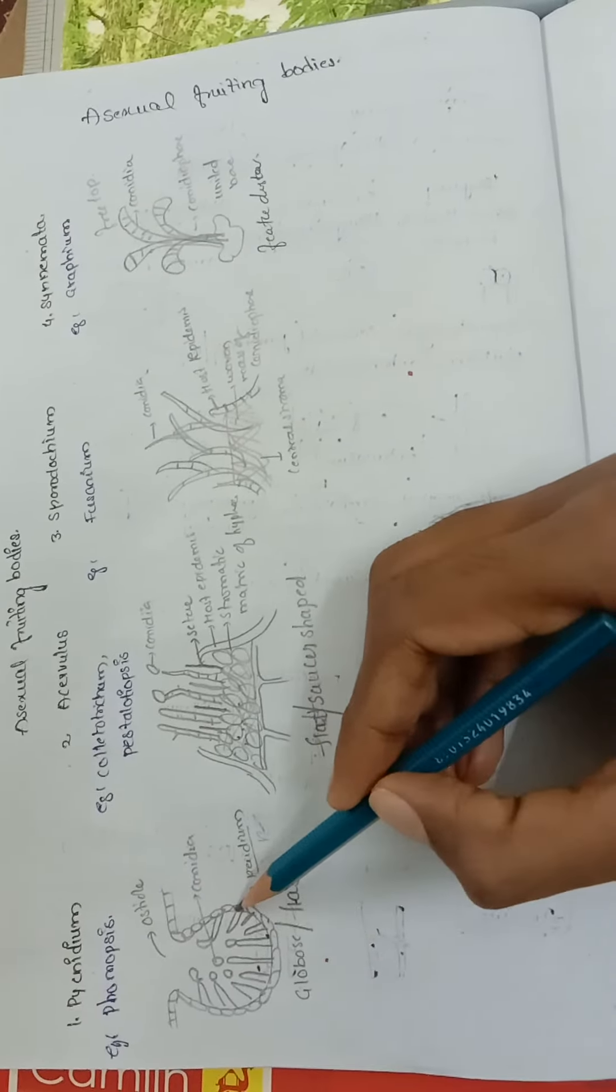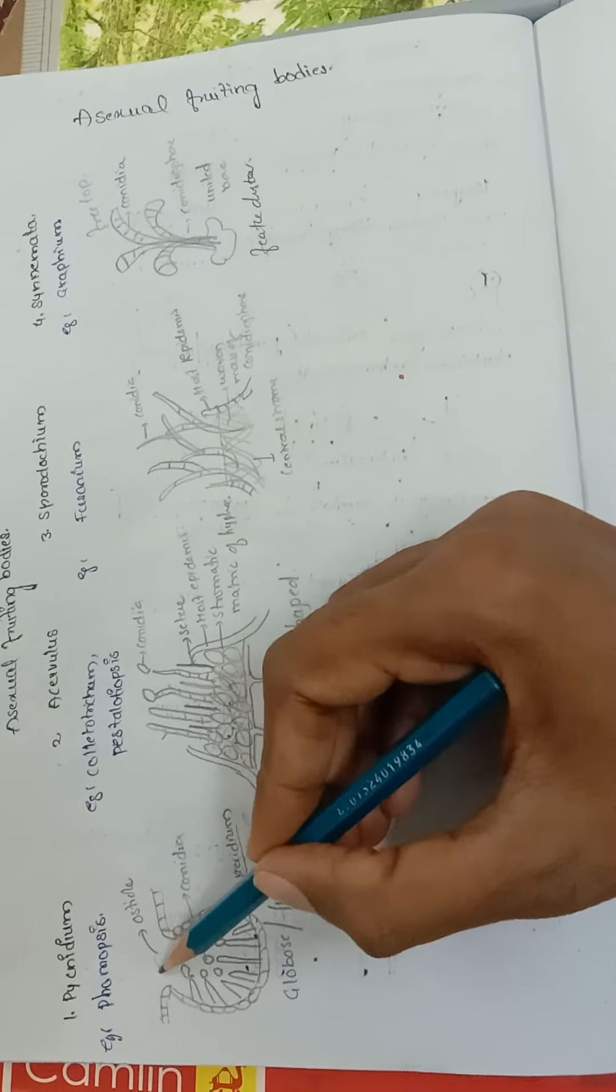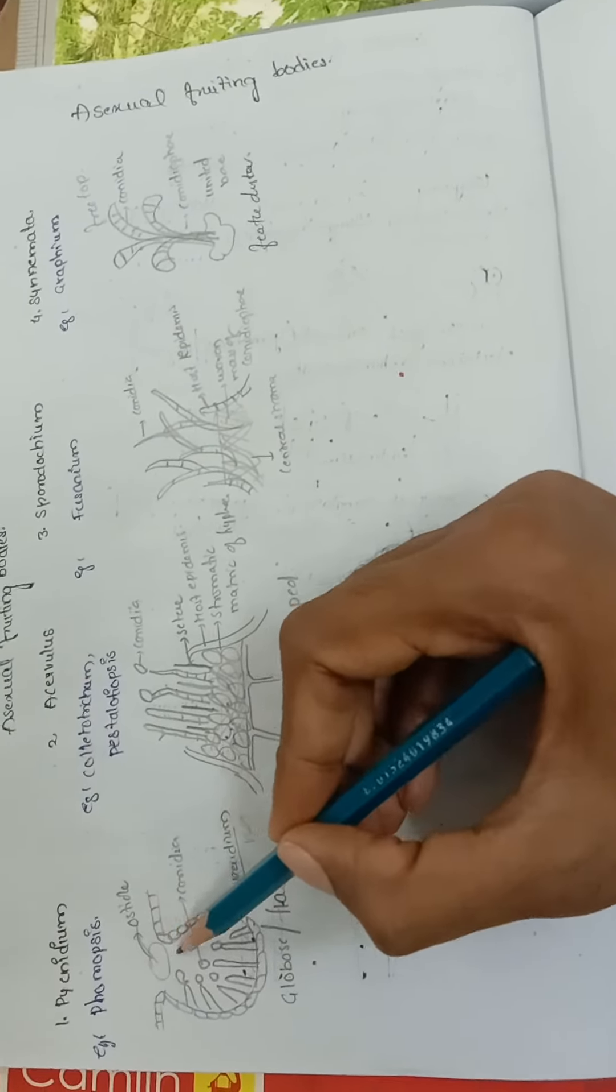This pycnidial body has an opening called ostiole through which the conidia will be dispersed.